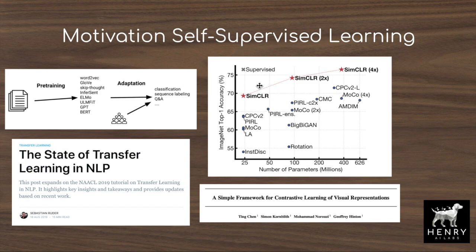In computer vision, we want a similar pipeline with massive image datasets, fine-tuned on things like pose recognition, object detection, segmentation, or classification. The closest we've come so far is the SimCLR 4X framework. SimCLR introduced advancements including larger batch sizes, larger models, stronger data augmentation, and adding a multi-layer perceptron projection head from the representations to the contrastive loss classification layer.